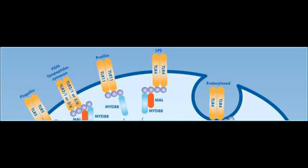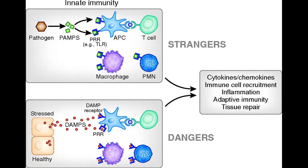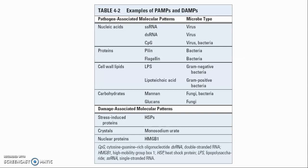The innate immune system uses several types of cellular receptors, present in different locations in cells, and soluble molecules in the blood and mucosal secretions to recognize PAMPs and DAMPs. There are many proteins present in the blood and extracellular fluids that recognize PAMPs, responsible for facilitating clearance of microbes by enhancing uptake into phagocytes or activating extracellular killing mechanisms. Innate immunity can distinguish only classes of microbes or damaged cells from healthy cells, but not particular species of microbes or cell types.